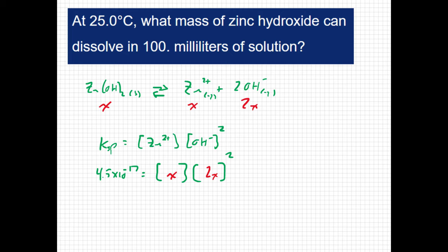If I take this statement and simplify it, I get 4.5 times 10 to the negative 17 equals 2x squared, which is 4 times x squared. And then I'm going to multiply that again by x. So I get 4x cubed, and then if I solve for x, I get 2.24 times 10 to the negative 6.